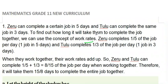Zero can complete 1 over 5 of the job per day, and To Look can complete 1 over 3 of the job per day. When they work together, their combined rate is 1 over 3 plus 1 over 5, which equals 8 over 15 of the job per day.